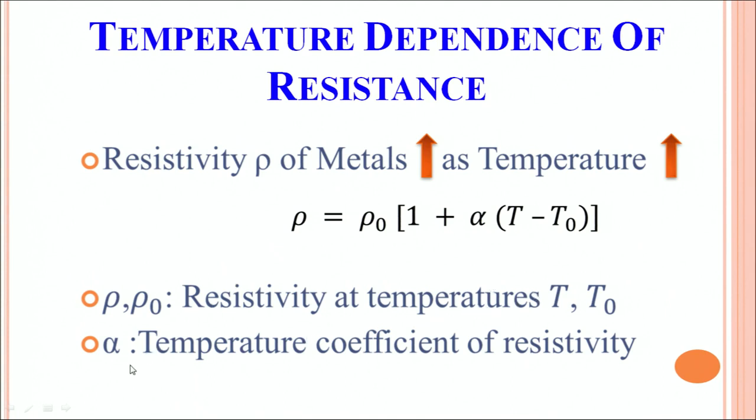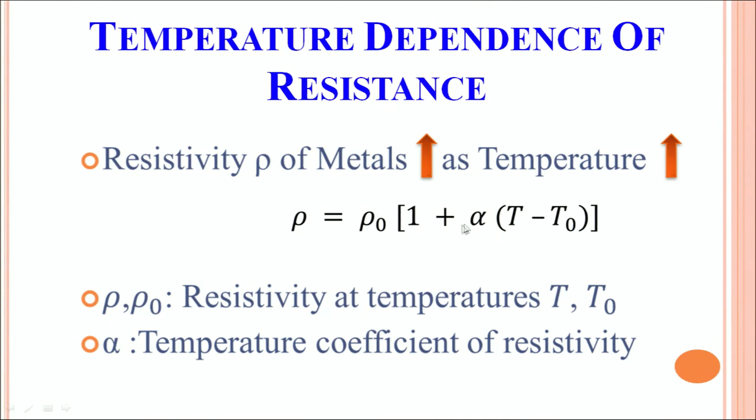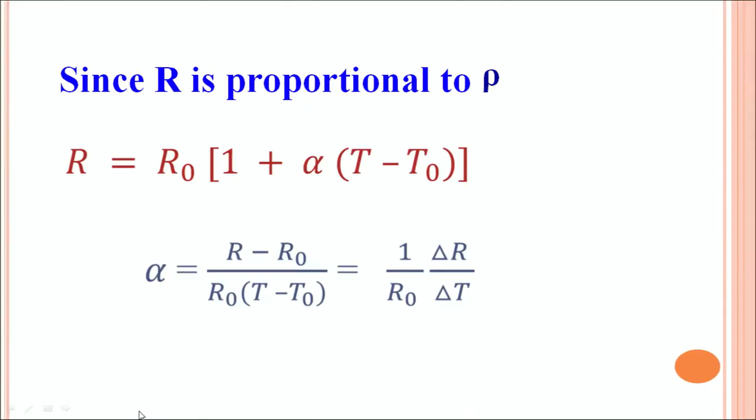What is α? α is the temperature coefficient of resistivity. For metals, α is a positive number and therefore, as T increases, ρ is bound to increase. Since R, the resistance, is proportional to ρ, the formula for resistance can be written like this: R = R₀ [1 + α(T - T₀)].